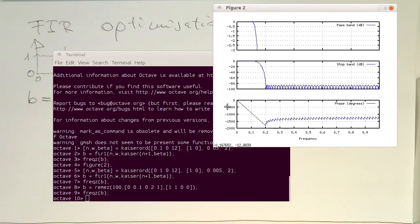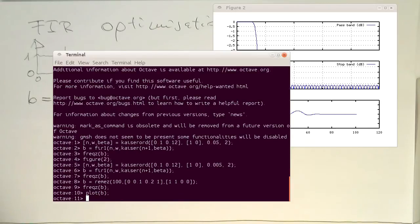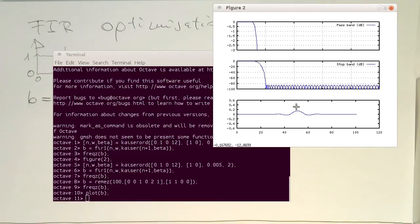Now we see this optimization process directly generates us this frequency response here. We could also have a look at the impulse response, which is generated by this here in the bottom curve. This is our impulse response of a low-pass filter.